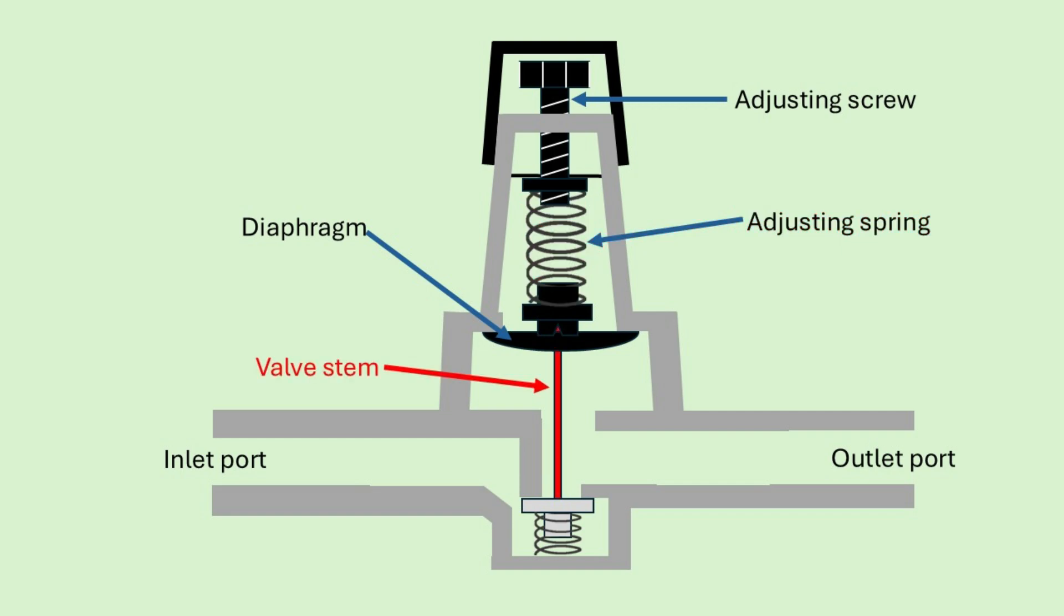Below the diaphragm, we have the valve stem and the poppet valve or disc. These components control flow by opening or closing the gap where pressure reduction occurs. Then there's a spring that helps to close the poppet valve. And lastly, we have a cap on top of the regulator.